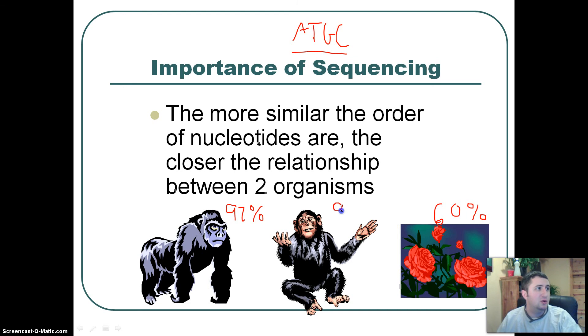And guess this. A chimpanzee, you share 99% of the DNA with a chimp. That means the order of the A, T, G, and the C is 99% the same between you and a chimpanzee. Kind of weird to think about.